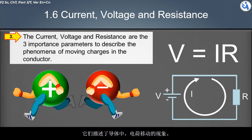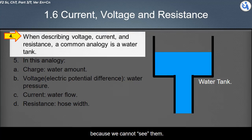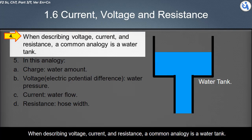The concepts of voltage, current, and resistance are difficult to understand because we cannot see them. To have a better understanding of the concept, we may use an analogy. When describing voltage, current, and resistance, a common analogy is a water tank.